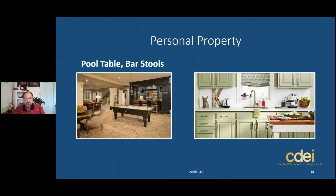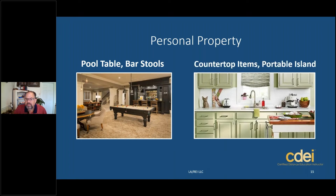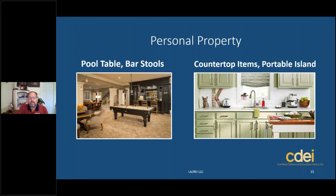Here's an example. We have a pool table, a bar, and bar stools — the pool table and bar stools can easily be taken out of the house. On the right side of the picture, you see the countertop items and a portable island on wheels — not permanently attached. The cabinetry, the green cabinets uppers and lowers, the quartz or granite countertop, and the water faucet fixtures are all considered fixtures or real property because they're permanently attached. But all items on the countertop, the portable island, the pool table, the bar stools, the chairs, and the round table that can be moved are all considered personal property.